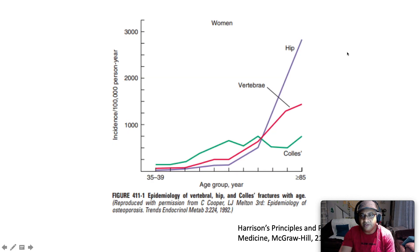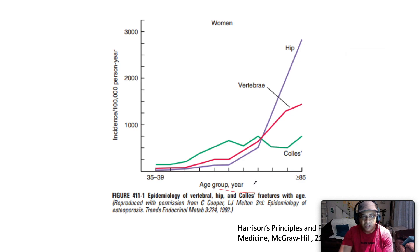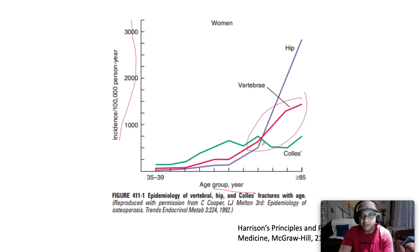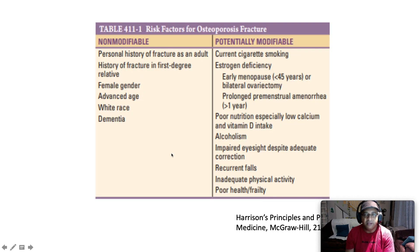Looking at this chart from Harrison's, on the x-axis we have age and on the y-axis the incidence of fracture per 100,000 persons per year. In green, Colles' fracture incidence is similar around ages 60 and 80. In red, vertebral fracture incidence significantly increases with age. Hip fracture incidence is significantly greater postmenopausally compared to premenopausally.